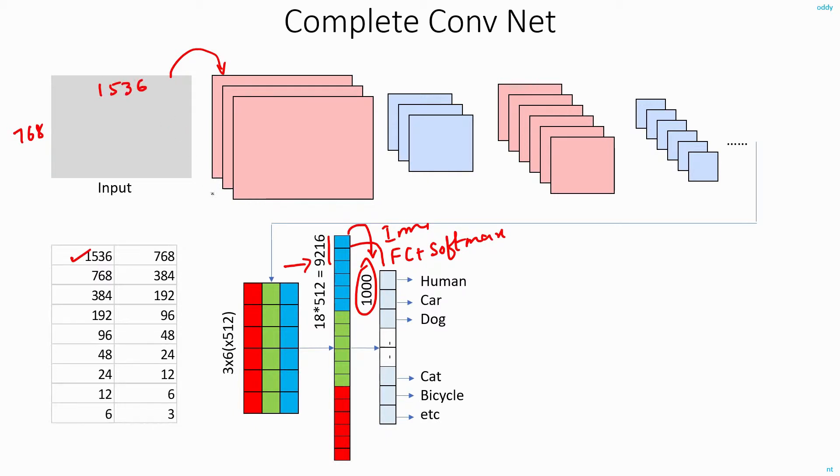And instead of straight away reducing the size to just 3 by 6, what you are doing is in successive layers, you are cascading the conv-pool layers and reducing it in a step by step process.